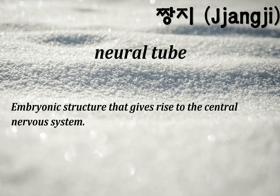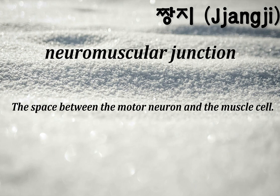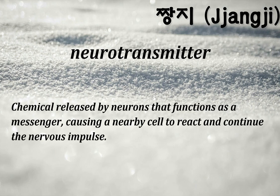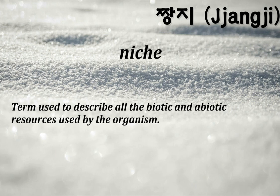Neural tube: embryonic structure that gives rise to the central nervous system. Neuromuscular junction: the space between the motor neuron and the muscle cell. Neurotransmitter: chemical released by neurons that functions as a messenger, causing a nearby cell to react and continue the nervous impulse. Niche: term used to describe all the biotic and abiotic resources used by the organism.